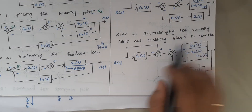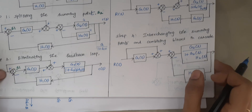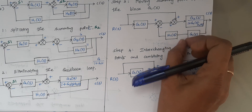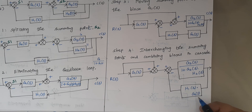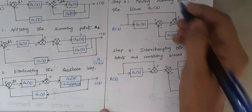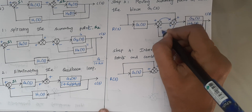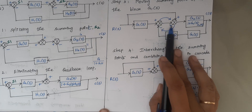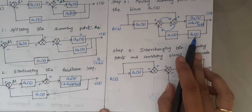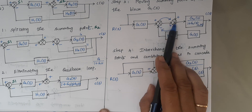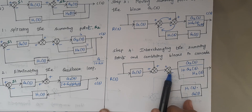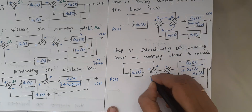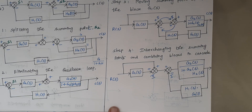The next step is interchanging the summing points and combining blocks in cascade. The two blocks are in cascade connection, so we multiply them to get H1(S)·G1(S). The two summing points get interchanged — summing point 1 moves to the position of 2, and summing point 2 moves to the position of 1. Accordingly, H1(S)·G1(S) moves along with its summing point.